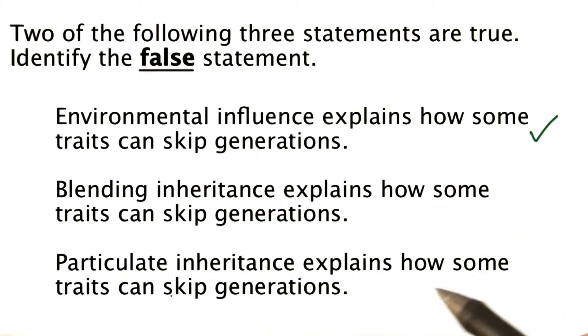Also, particulate inheritance explains how some traits can skip generations. We learned that if you have these discrete units that you pass on to the next generation, some can be hidden by other particulate pieces and so they don't show up.